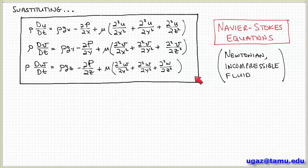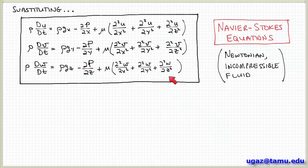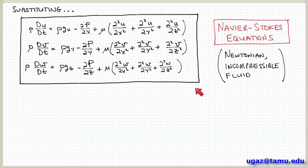The Navier-Stokes equations are very important for fluid mechanics because they allow us to determine the velocity field — u, v, and w, the x, y, and z velocity components — at any point in space for any kind of flow, as long as we can solve them. The challenge is that this is a system of nonlinear partial differential equations, so it's not trivial to solve. There aren't many cases solvable by hand, though they can be solved computationally. Given the flow characteristics and appropriate boundary and initial conditions, we can in principle obtain the velocity field in 3D space as a function of time.